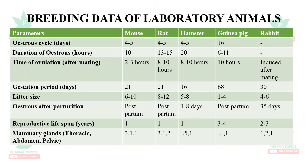Gestation period is approximately 21 days in mouse and rat, 16 days in hamster, 68 days in guinea pig, and 30 days in rabbit. Litter size: mouse 6–10 pups, rat 8–12 pups, hamster 5–8 pups, guinea pig 1–4 pups, and rabbit 4–6. Resumption of estrus after delivery is postpartum in mouse, rat, and guinea pig; in hamster it resumes after 1–8 days; and in rabbit after 35 days.